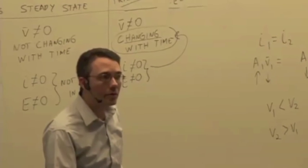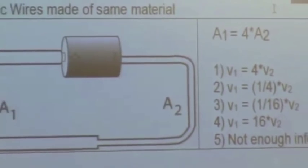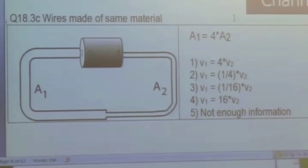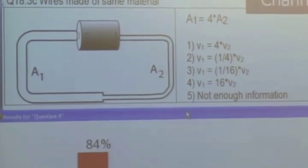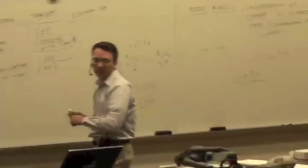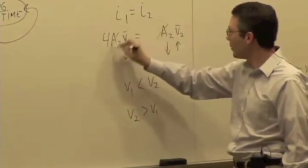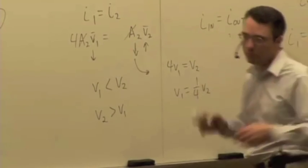Let's be quantitative. If the area of wire one is four times bigger than the area of wire two, we plug directly into our equation. Setting A1 = 4·A2, the A2's cancel out, giving us 4·V1 = V2, or V1 = ¼·V2. So the drift speed is directly proportional to the inverse of the cross-sectional area.